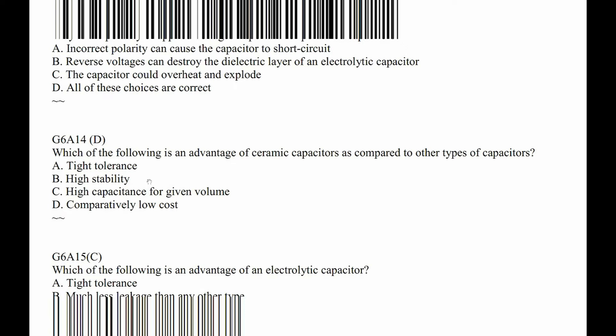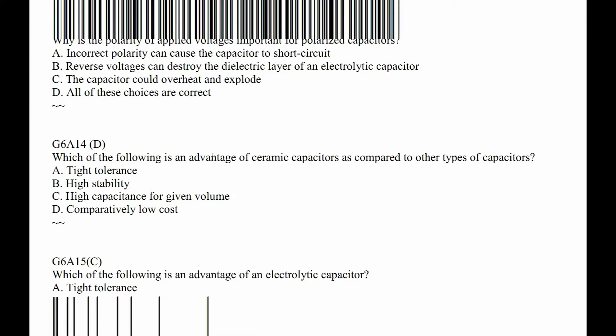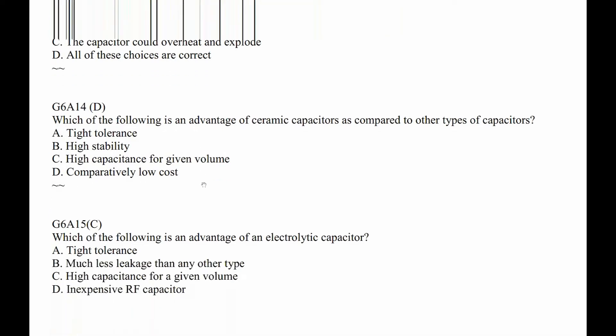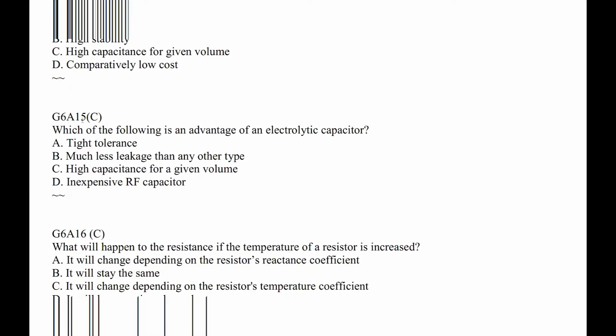G6A14. Which of the following is an advantage of ceramic capacitors as compared to other types of capacitors? Well, they are dirt cheap — pennies a piece. G6A15. Which of the following is an advantage of an electrolytic capacitor? The packages they're in are so small and have so much capacitance it's almost hard to believe. What might have been a 12 by 4 by 6 inch capacitor in days gone by is now the size of your thumb.